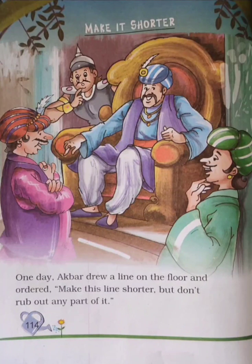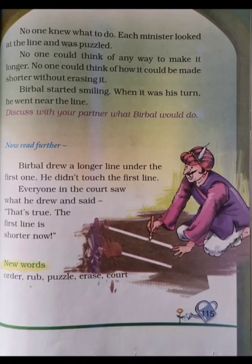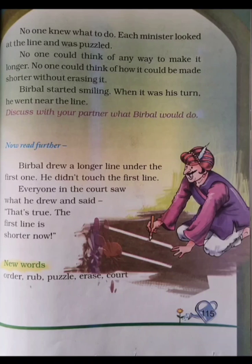Make It Shorter. One day, Akbar drew a line on the floor and ordered: make this line shorter, but don't rub out any part of it. No one knew what to do. Each minister looked at the line and was puzzled. No one could think of any way to make it shorter without erasing it. Birbal started smiling. When it was his turn, he went near the line.